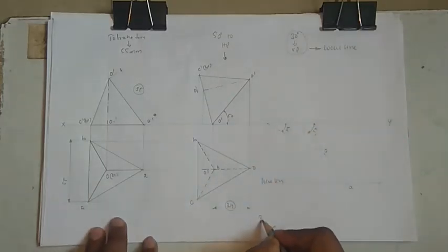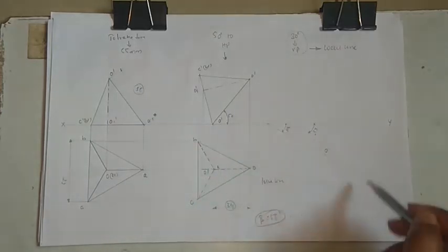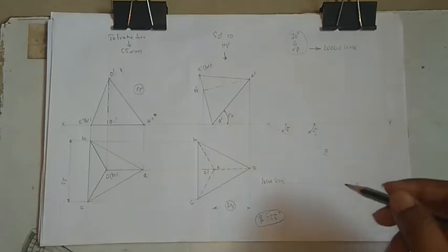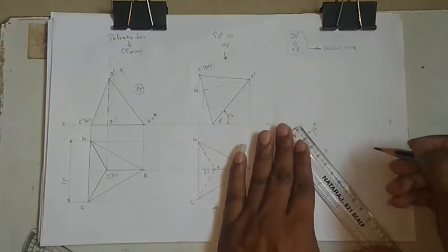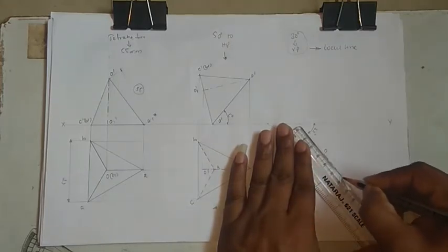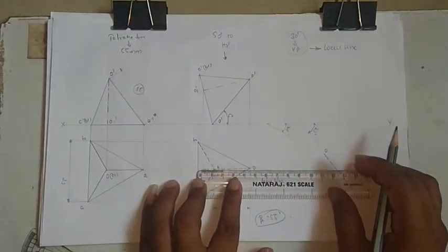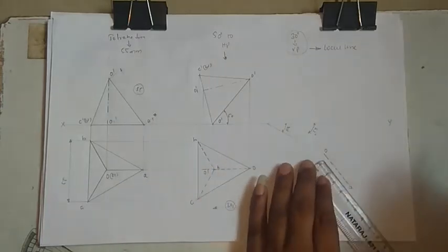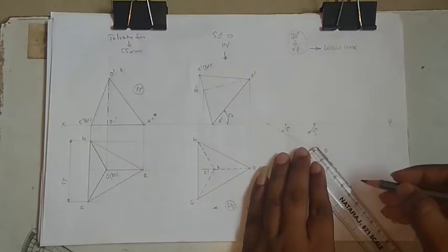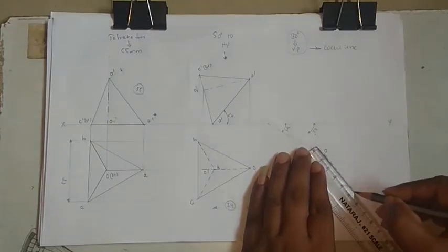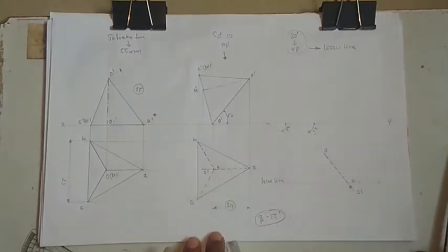Drop a line from A through O. Measure this angle — it comes to about 55 degrees. So beta equals 55 degrees. Now we need to construct the tetrahedron on this line. O to A is a dotted line, so make this line dotted. The extension O to O1 is about 10mm — extend on the same line to get O1.